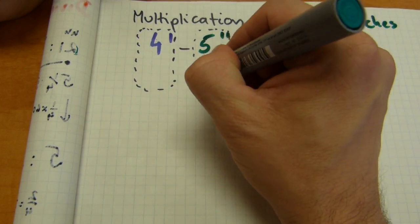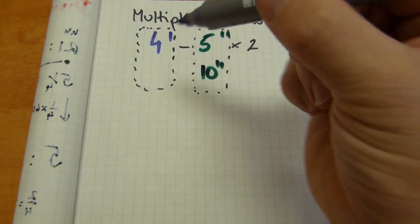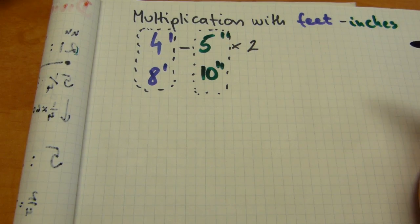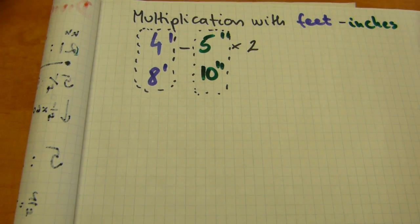5 by 2 of course is 10 inches, and 4 feet doubled is 8 feet. The answer is when you double 4 foot 5 inches is 8 foot 10 inch length. So that's an easy one.